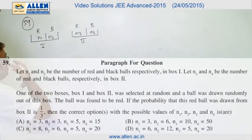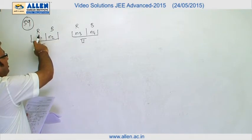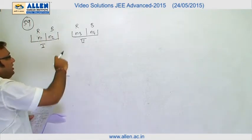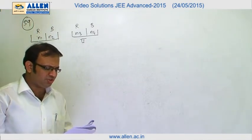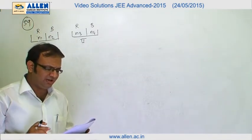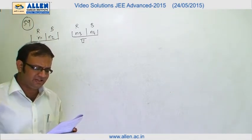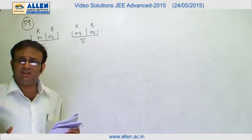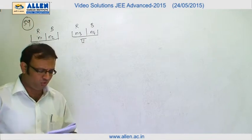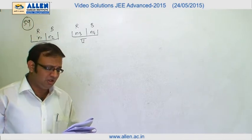In this problem we are given two boxes, box 1 and box 2. The contents of box 1 and box 2 are red balls and black balls, with number of balls n1, n2, n3, and n4. The first question asks: out of the two boxes, one box was selected at random and a ball was randomly drawn. The ball was found to be red. If the probability that this red ball was drawn from box 2 is 1/3, we have to choose the values of n1, n2, n3, n4. Clearly this is a Bayes' theorem problem.